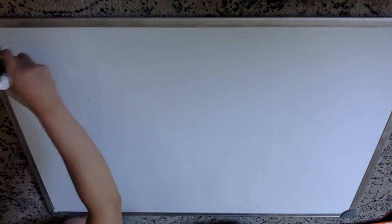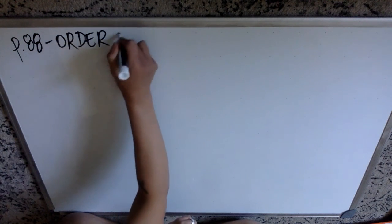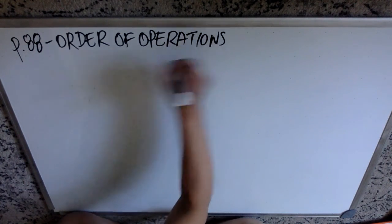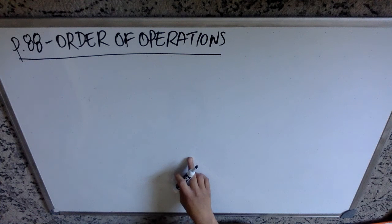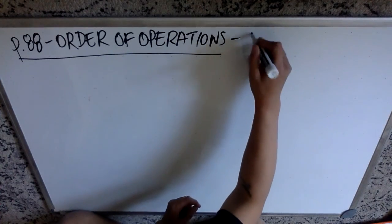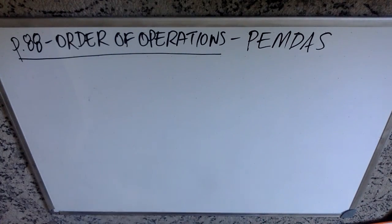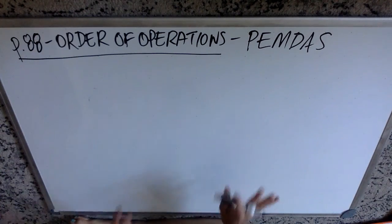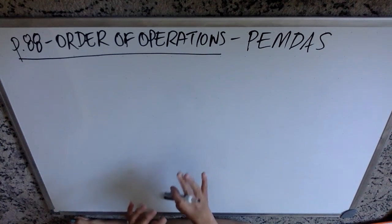We're going to skip down to the next thing on page 88, which is order of operations. What's funny is that we did an intro to solving equations in chapter one where we did order of operations backwards, which means there's a really good chance you already know order of operations forwards. Order of operations is PEMDAS — 'Please Excuse My Dear Aunt Sally' if you're using a phrase to memorize. We're going to walk through it anyway to make sure we're really solid.